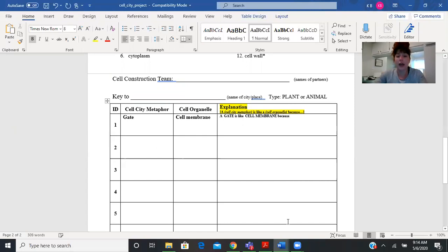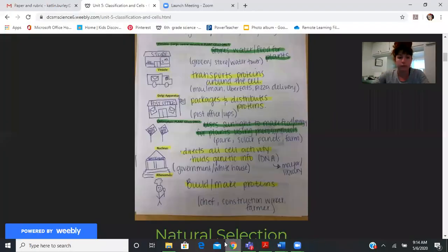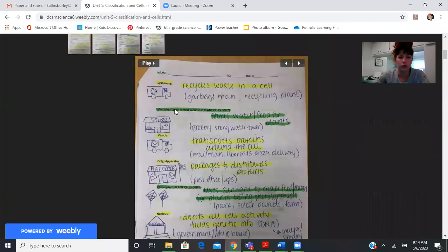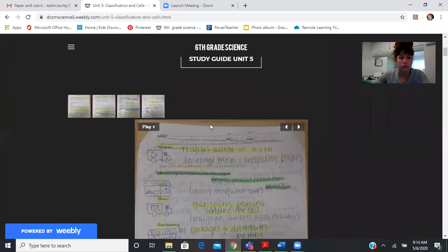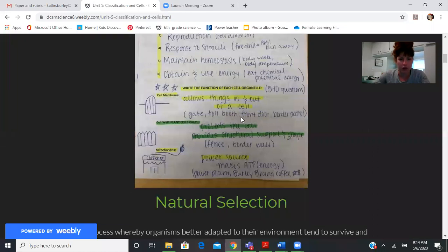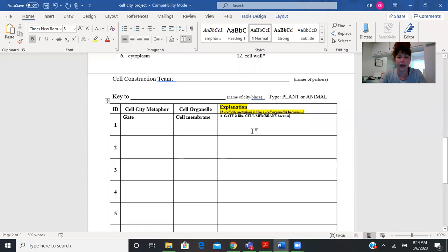So the explanation would say: a gate is like a cell membrane because - and if you use our notes - a cell membrane allows things in and out of a cell. So I could say a gate is like a cell membrane because they both allow things in and out of a cell.